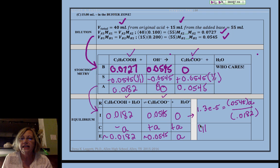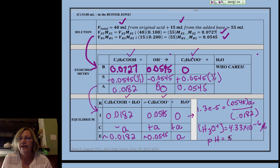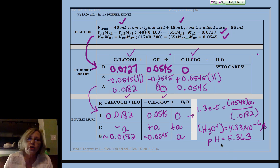Okay, so if I solve this for a, I get H3O+ is equal to 4.33 times 10 to the minus 6 molar, and my pH is equal to 5.363.